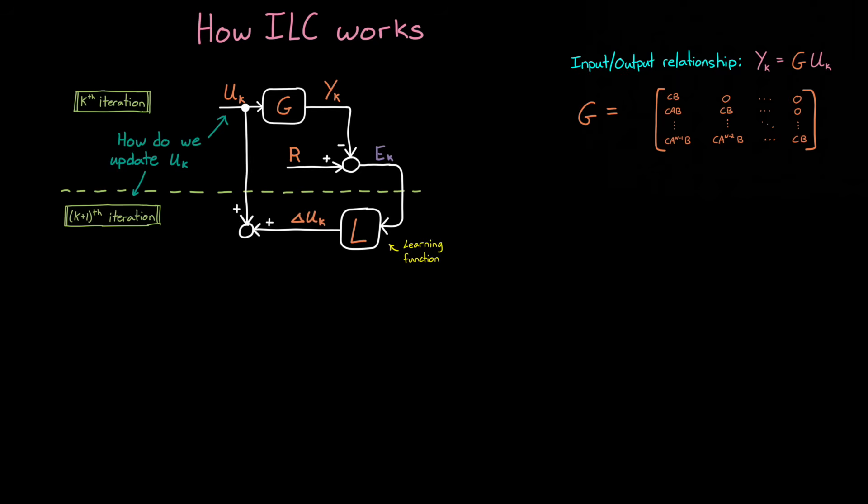Now, this produces a delta u signal, and we add that to u_k to get the new input u_k plus 1. Now, in many practical applications of ILC, often a low-pass filter is added here to remove high-frequency noise and to reduce chattering in the controller.